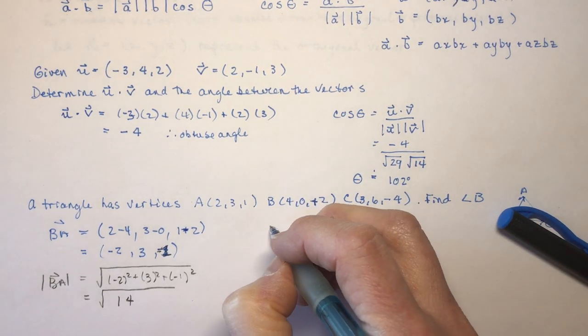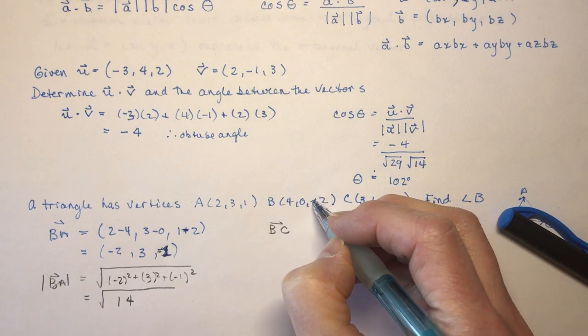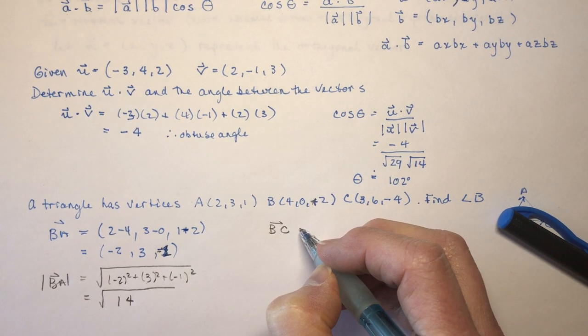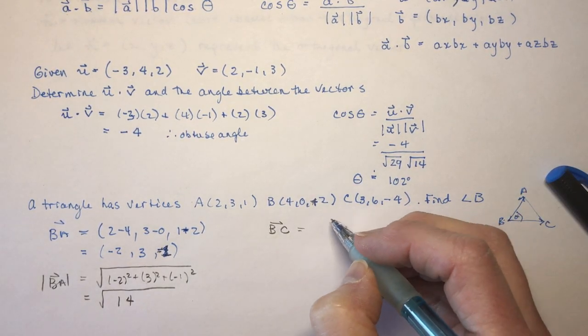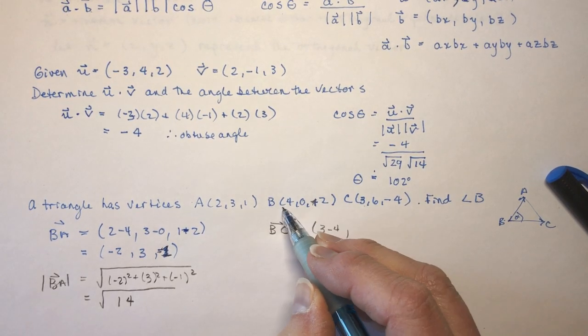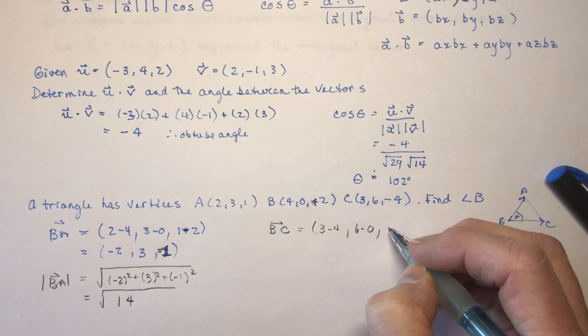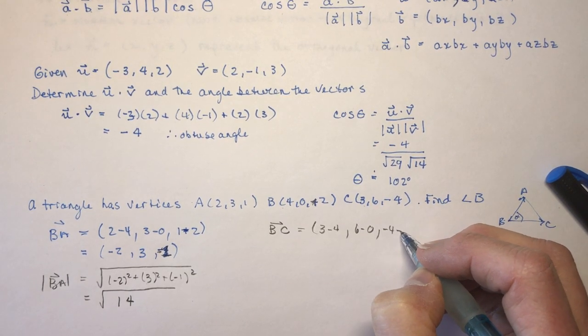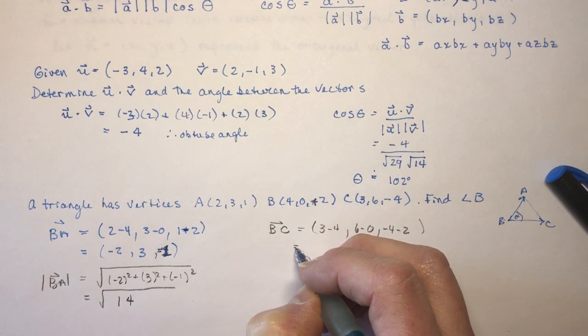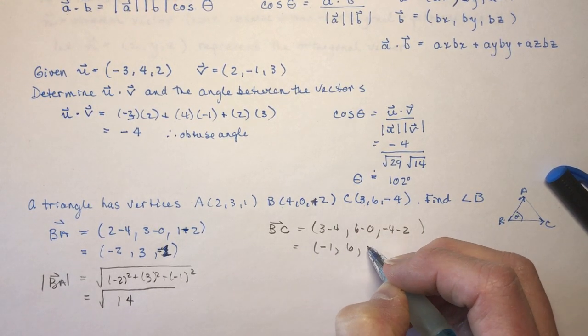So let's do BC, and this time we'll use the right value here being positive. So BC is C minus B, so 3 minus 4 is my first coordinate, 6 minus 0, and minus 4, minus 2. And that would give me minus 1, 6, and minus 6.